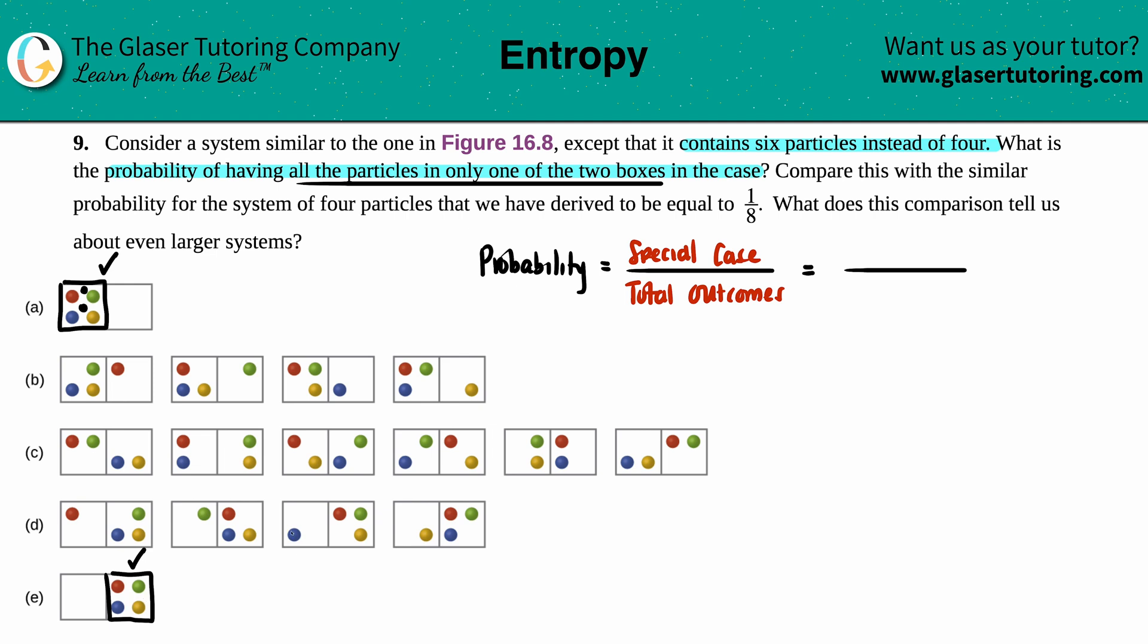But now how are we going to find out the total outcomes? Well, here comes the formula. In order to find the total number of outcomes, it's always 2 raised to the n, and the n value is your total number of particles in this case. So our n value is the total number of particles.